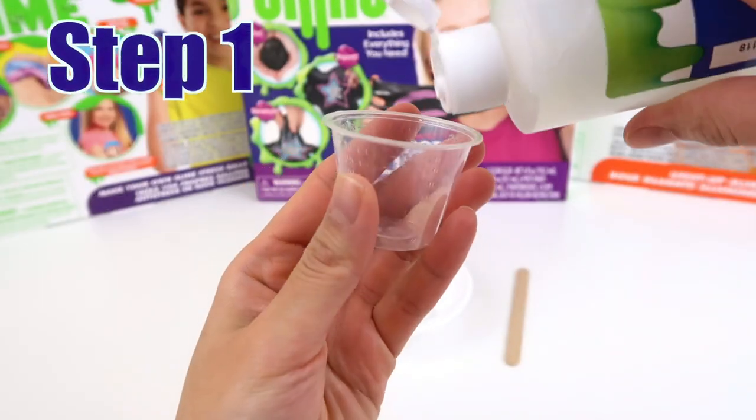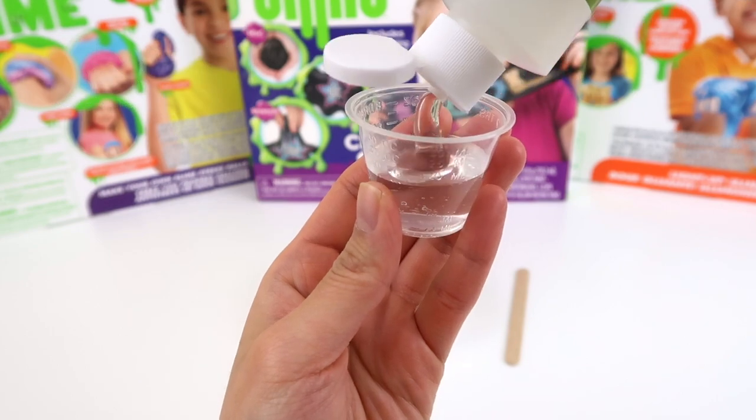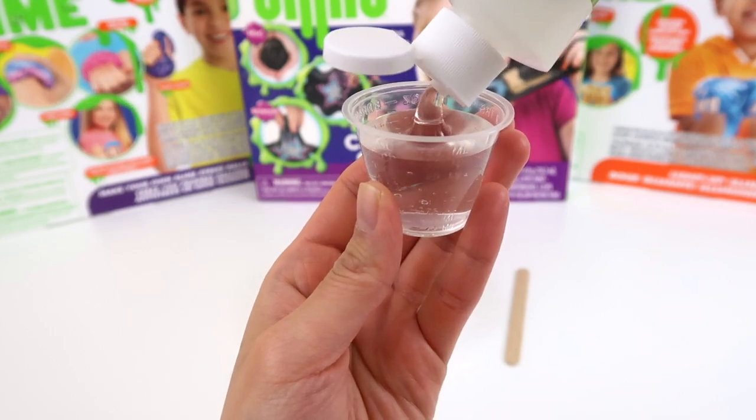Step 1. Measure and pour 30 ml of clear glue. Almost a full cup.